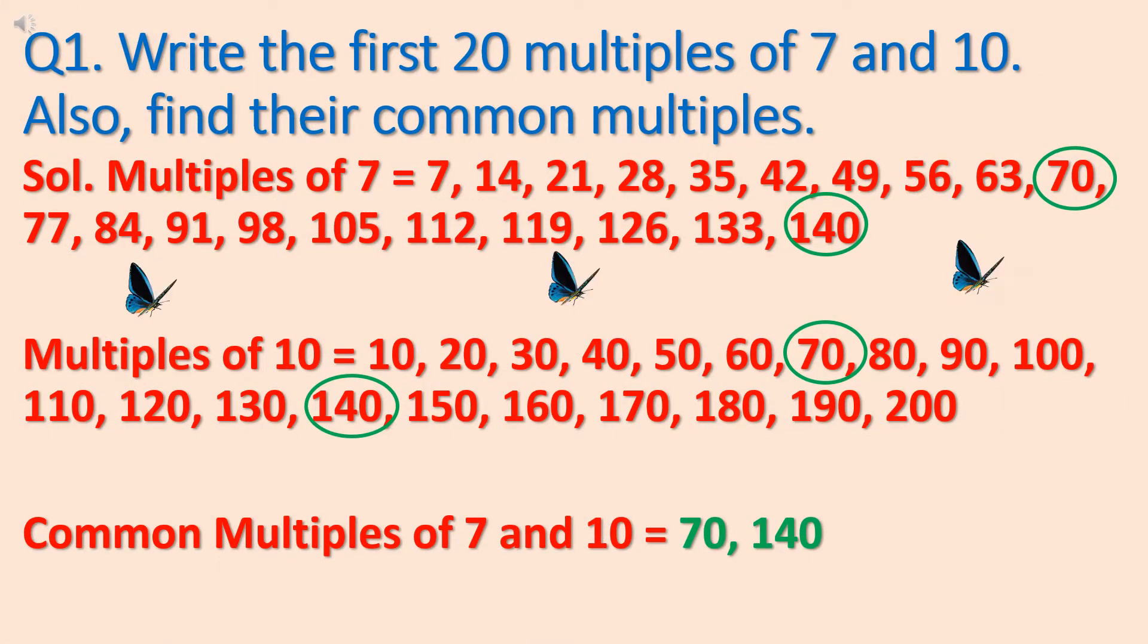Let's understand it with the help of examples. Our first question is write the first 20 multiples of 7 and 10. Also find their common multiples.